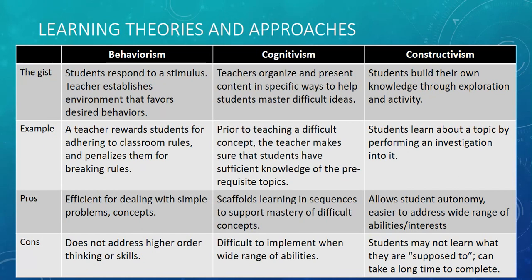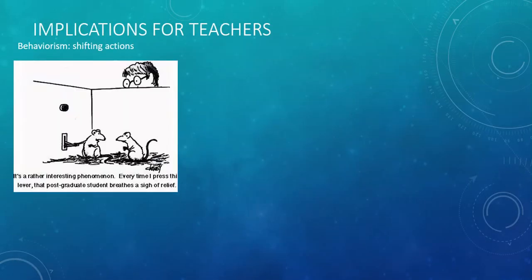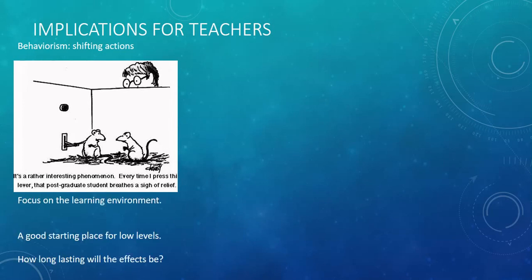Keeping this in mind, what are some implications for teachers? Behaviorism is about shifting actions — I'll leave this little comic here for you to read. You want to be focusing on the learning environment. This is a good starting place for lower levels of learning, but it can have implications you might not expect. If a student becomes conditioned to receiving a certain reward for behaving well, then as soon as you take that reward away, they might not behave as well as you would have hoped.